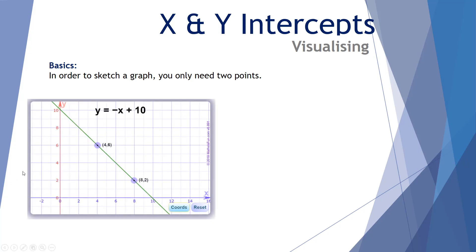So here I have the point (4, 6) and the point (8, 2). Now these are Cartesian coordinates. The 4 represents the x and the 6 represents the y value. 8 represents the x and the 2 represents the y value. With these two points, we can get a ruler, draw a line, and we have an accurate sketch of that particular equation.